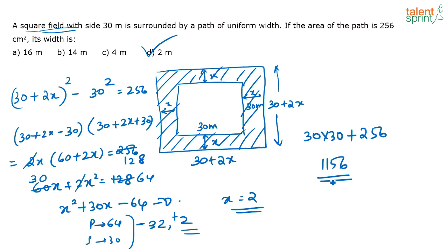See now what is this 1156? It is nothing but the area of this big square. So what is the one side of the square? It is nothing but root of 1156 which you get as 34.